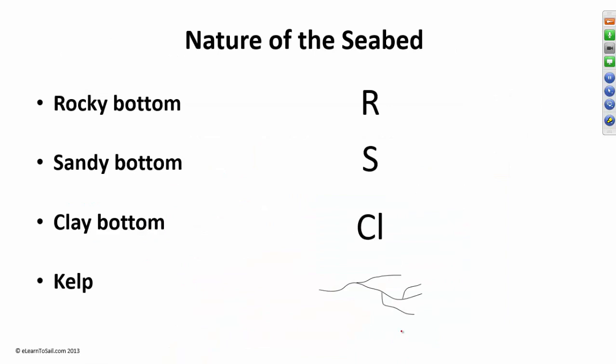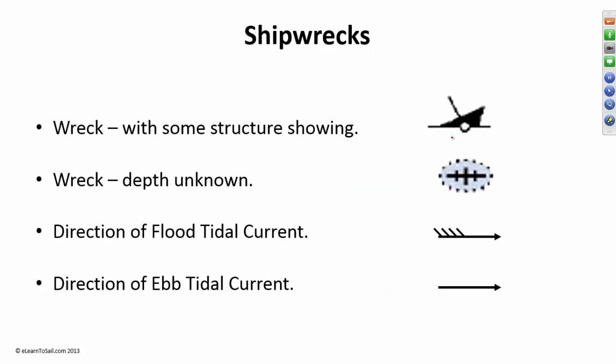The nature of the seabed. R means that you've got rocks. S is sand. CL is clay. Kelp are the little squiggly lines. A wreck, there's several symbols. If there's some structure showing, you'll get this. Depth unknown is the line with the dashes through it. Direction of the flood current is an arrow with feathers. So the way I remember this is flood with feathers. And an arrow indicating the direction of the ebb current is an arrow with no feathers.